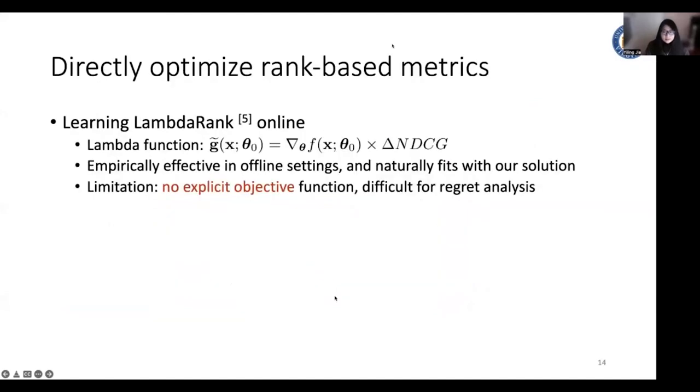We also extended the neural ranker to Lambda rank, which directly optimized the ranking matrix NDCG. So Lambda rank naturally fits our solution. For a given pair of documents, the confidence interval of Lambda rank estimation can be calculated by gradient of the neural network in the same way as RankNet. The key limitation of this extension is Lambda rank does not have explicit objective function. So it is difficult for this regret analysis.